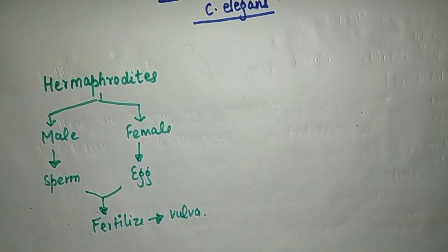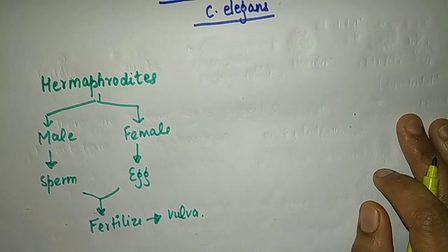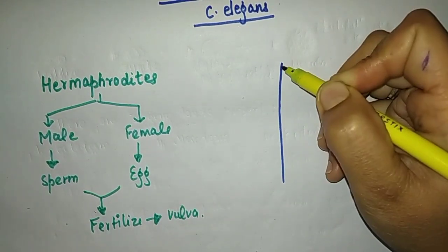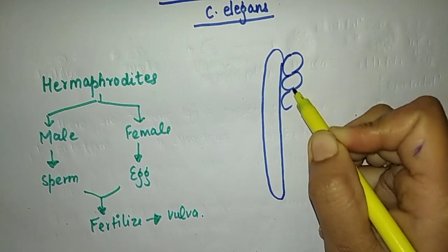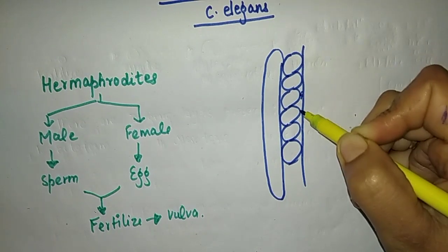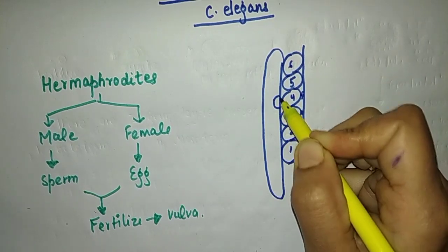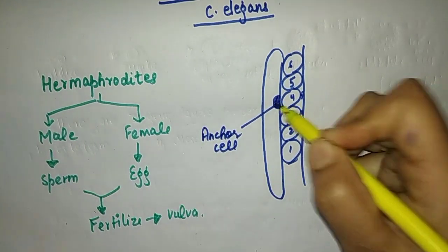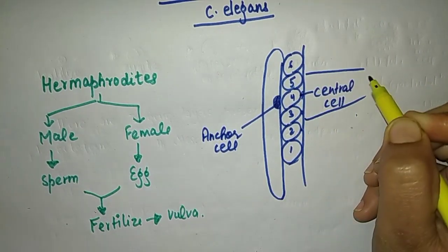So here we discuss how the vulva forms. There are special inductive signals received by vulva precursor cells. Here is the gonad. In C. elegans there are 6 vulva precursor cells: 1, 2, 3, 4, 5, 6. Here is the anchor cell, which plays an important role in this. The cell closest to the anchor cell is known as the central cell, and the rest are known as lateral cells.